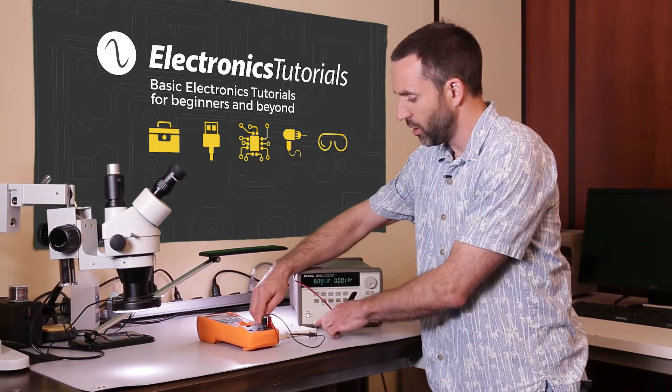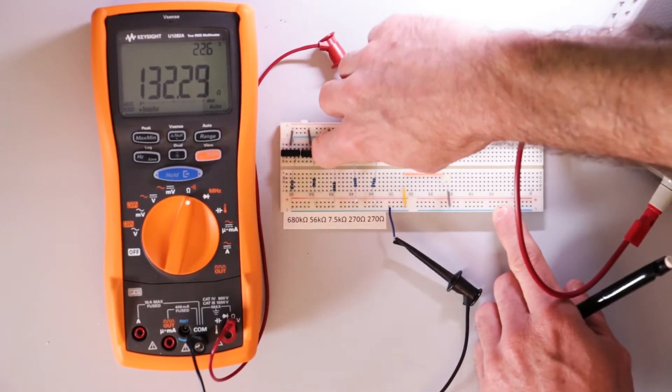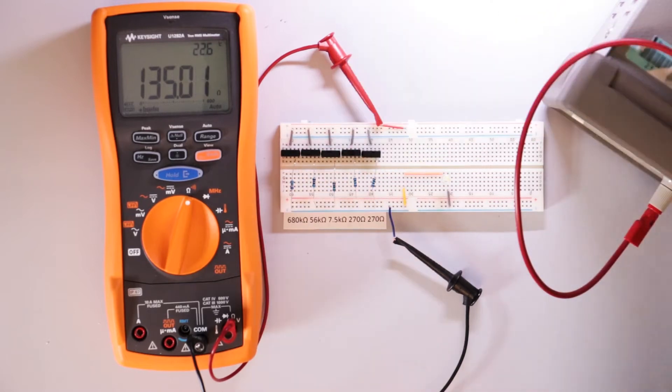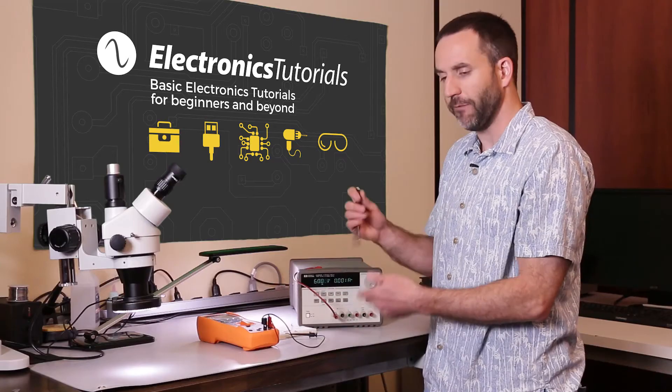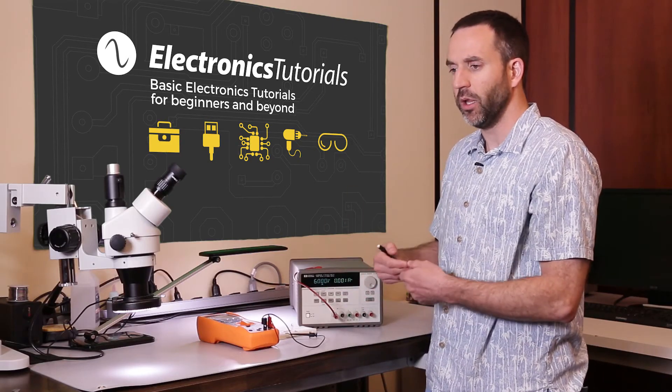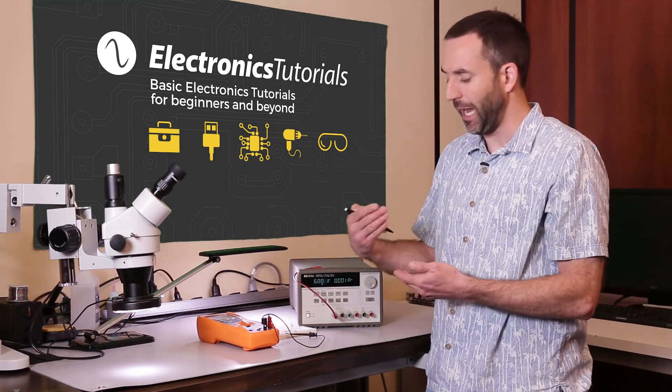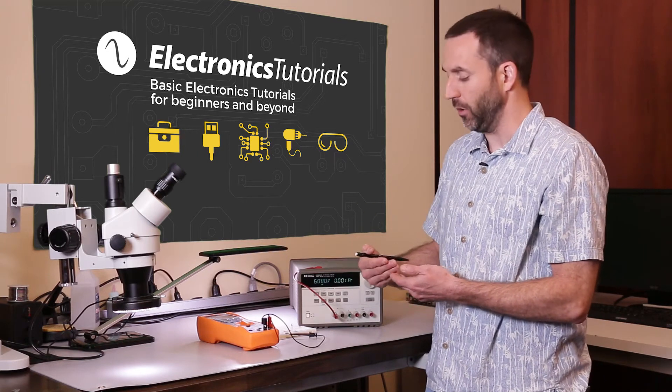If I turn all of them off except for the two 270 ohm resistors, you'll see it's 135, which is exactly half of one of these. When you have two resistors in parallel that are the same value, you're going to have exactly half the value.